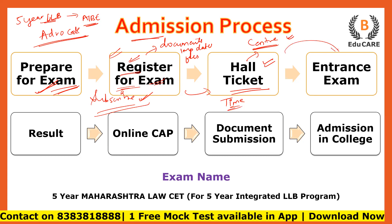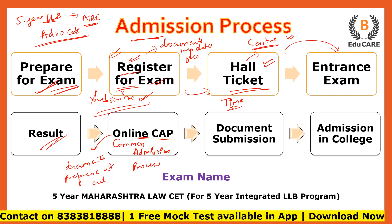उसके बाद आप exam के लिए appear करोगे, और exam के कुछ ही दिन बाद आपका result आ जाता है। Result में आपका score और cut-off के हिसाब से आपको law college में admission मिलेगा। Admission के लिए CAP round होता है — यानी Common Admission Process। यह process online mode में होता है, किसी college में जाने की जरूरत नहीं है। CAP round में कौन से documents लगते हैं, preference list कैसे भरनी है, last year के colleges के cut-offs क्या थे — ये सारी details Be Educate के YouTube channel पर मिलेंगी।